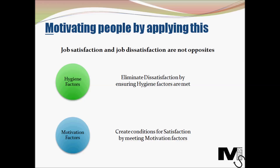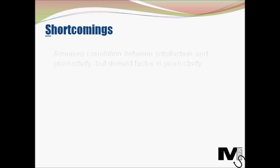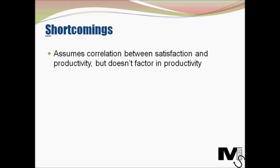What are the shortcomings of the Two-Factor Theory? Firstly, it assumes there is a correlation between satisfaction and productivity. Productivity — the bottom-line results — is the most important factor for organizational leadership and business owners, yet there is no real link established between satisfaction and productivity in the theory, which is a major shortcoming.